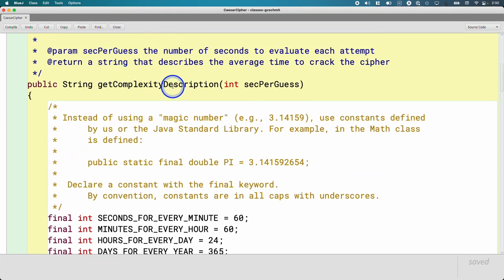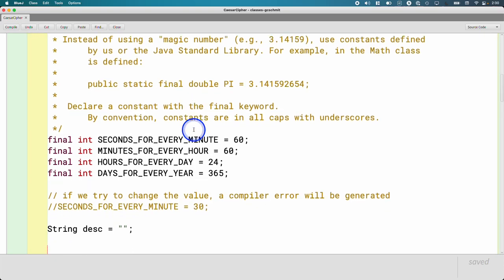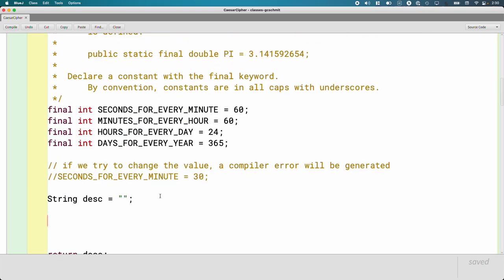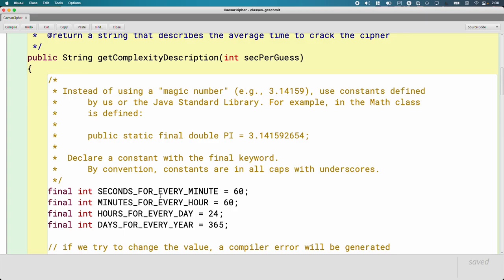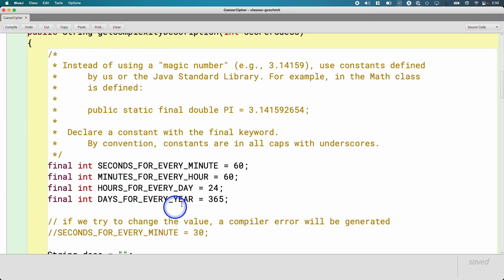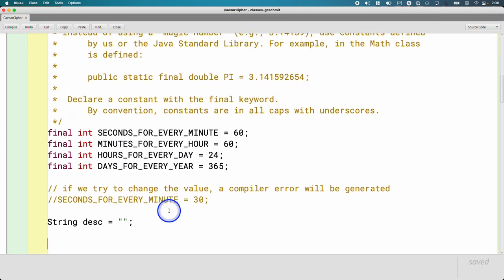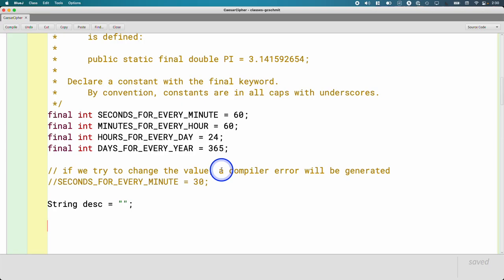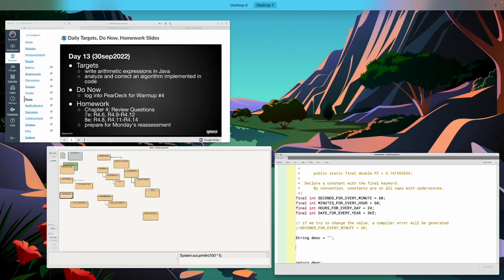We started writing this method getComplexityDescription with the eventual goal of returning a string that describes a large number of seconds in a way that's more understandable to people. Rather than returning 130 seconds, we want to be able to say it's two minutes and 10 seconds. These constants are going to help us do these conversions. Today we're going to focus on actually doing the calculation and the operators we use to do this.